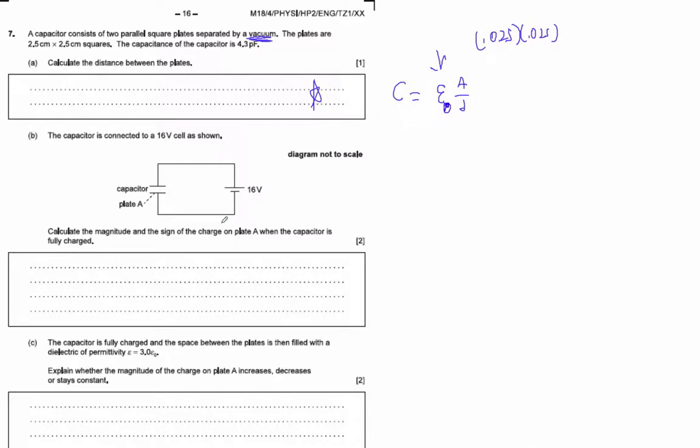Calculate the magnitude and sign of the charge on plate A when the capacitor is fully charged. Well, the way capacitors work is this is at a charge of, say, 2 microcoulombs, which is not correct.